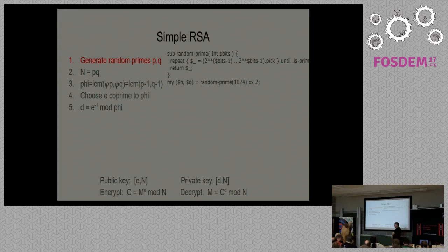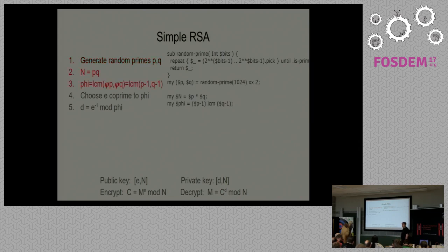Generating random primes is really simple, except my is_prime ran off the screen there. We have a number of bits; we just keep taking random numbers until it's prime. And there we go — now we can fill up P and Q very easily.